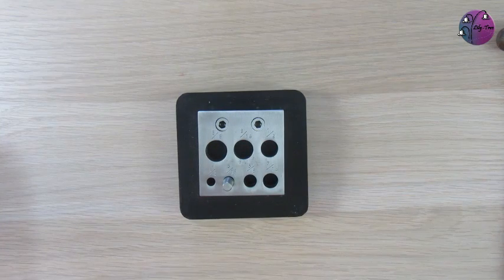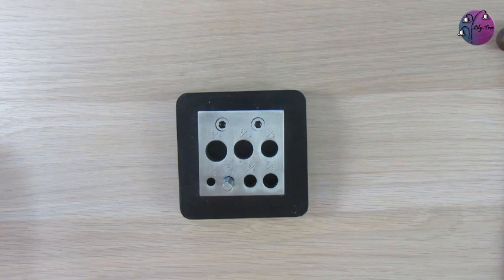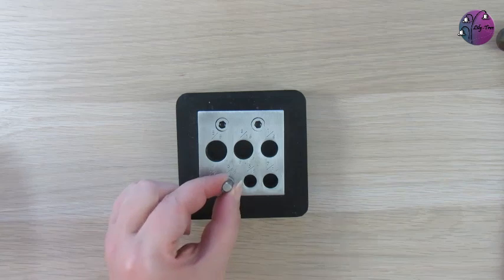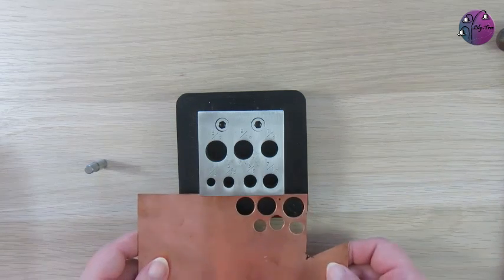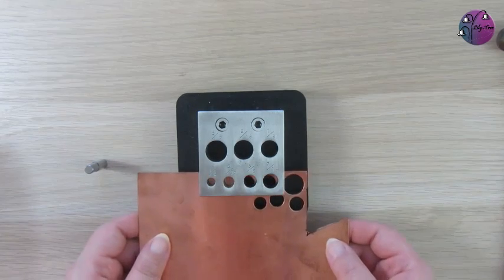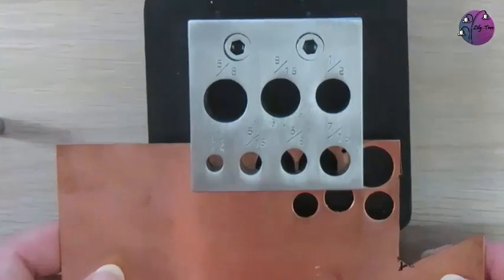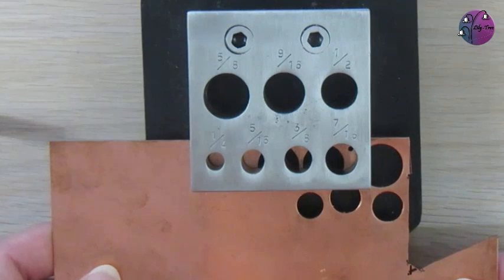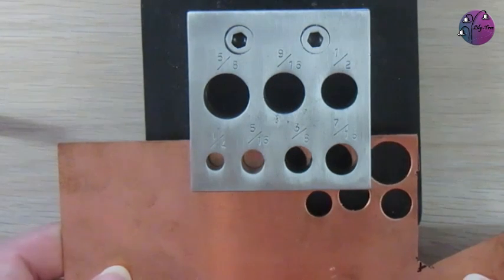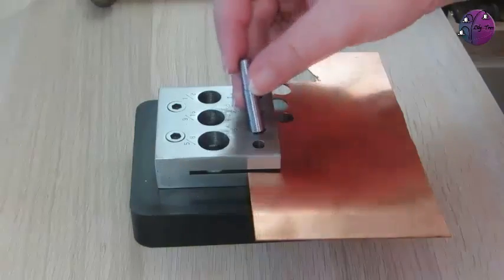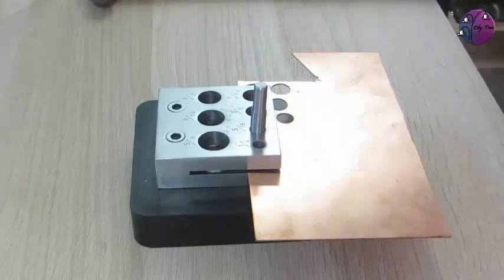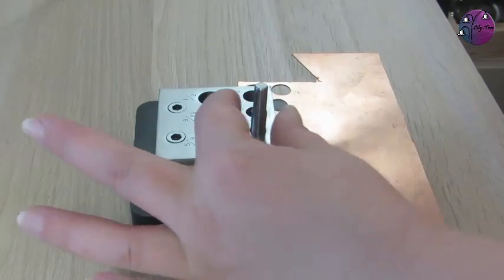So I've got my disc cutter here and I've taken all the pins out apart from the one I want to use. I'll just take the pin out for now and then I can position my copper in the center, and I just want to make sure that there isn't any edges showing. This is the 0.9 millimeter thick copper I'm using at the moment.